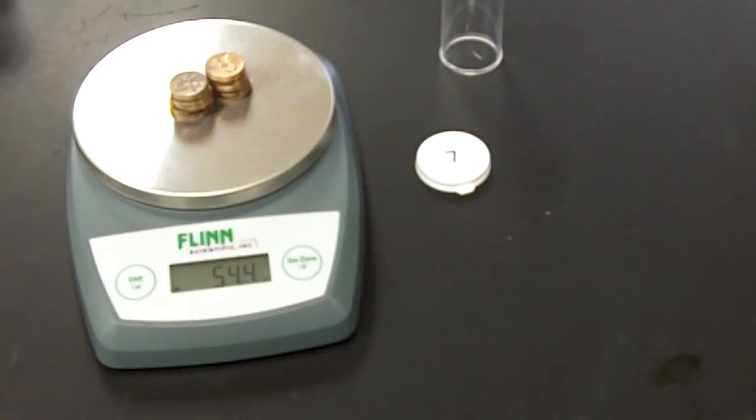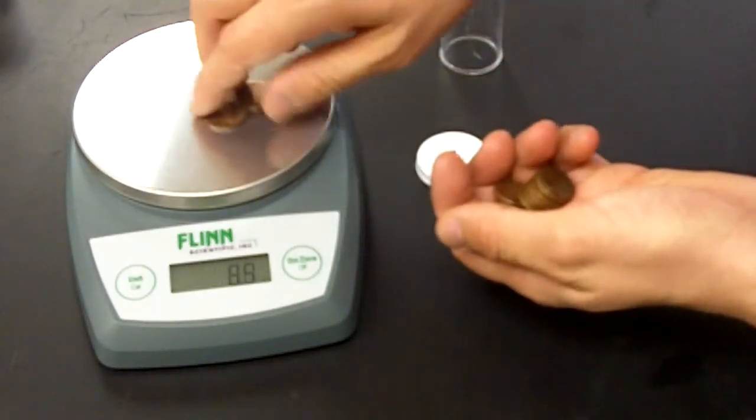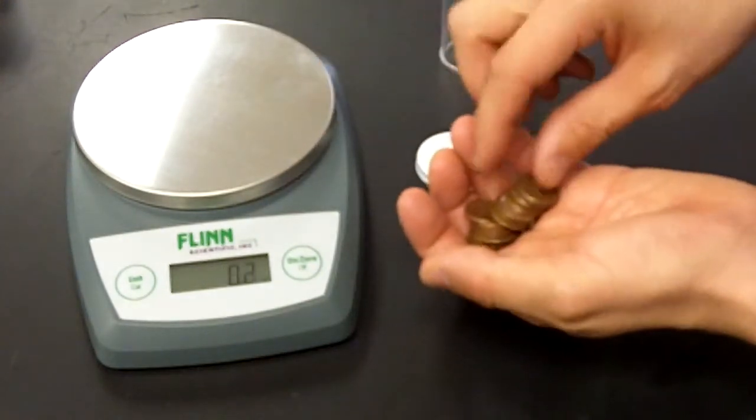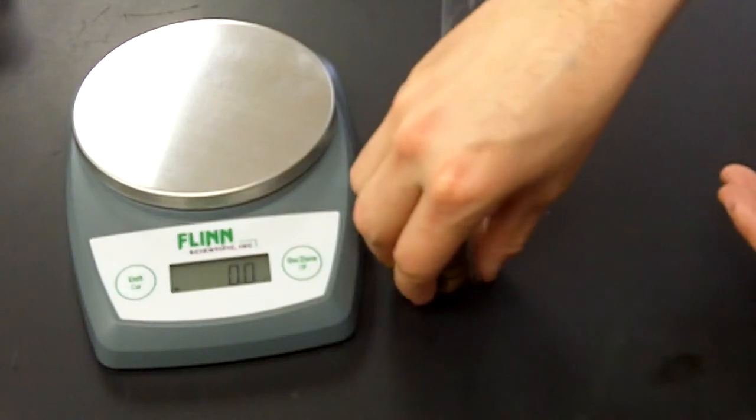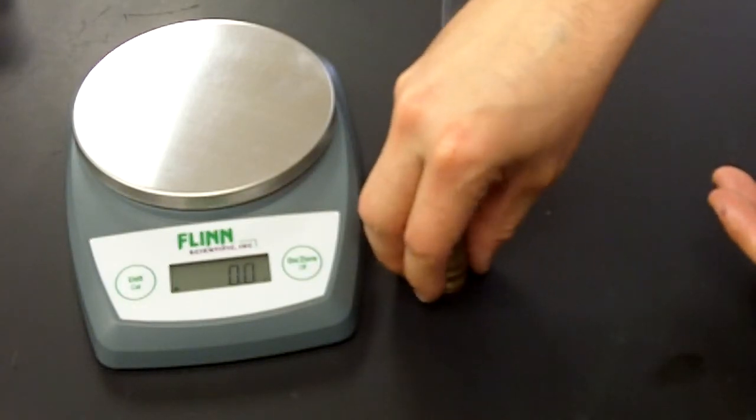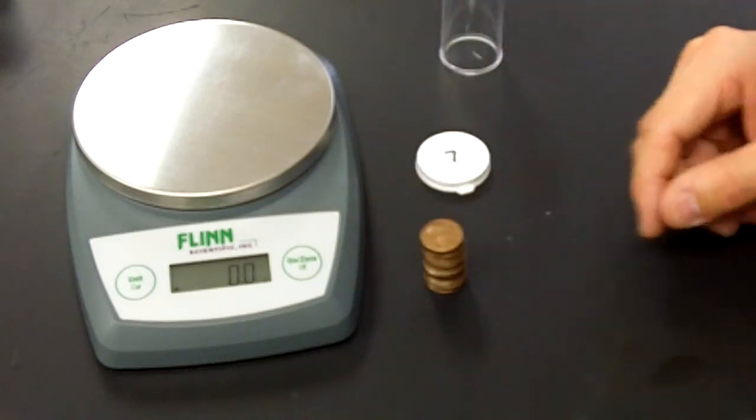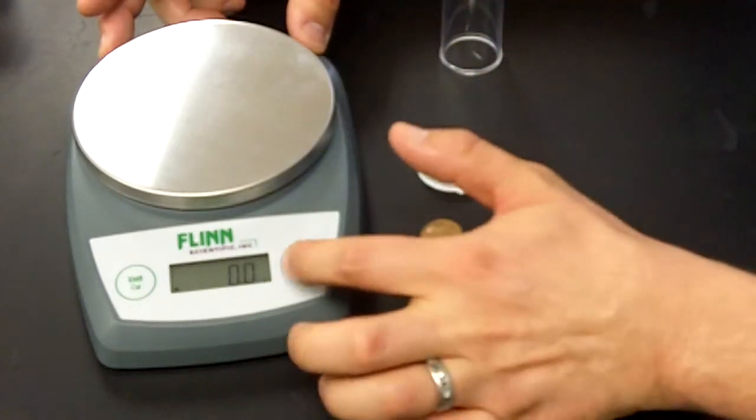Step 3: For each of the individual pennies, record the year the penny was made in the data table. Step 4: Measure and record the mass of the penny to the nearest tenths place in the data table. Steps 3 and 4 we'll do simultaneously. Pulling the pennies off, it's also careful to notice that you want to zero the balance in between each mass measurement. So as we go through these 20 pennies, I'll be indicating the year that the penny was made, placing it on the already zeroed balance, and then reading off the mass.